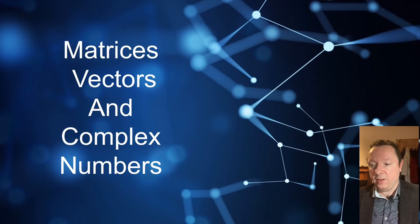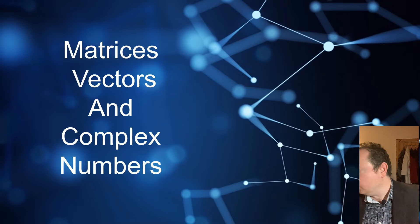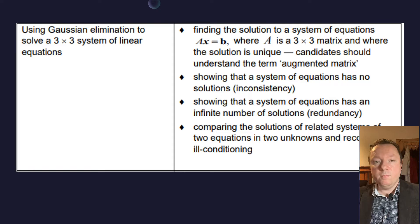Okay, matrices, vectors and complex numbers. Quite a lot out of this this year. Starting off with matrices, Gaussian elimination to solve a system of 3x3 linear equations. So the first point is fine, find a solution to a system of equations A x equals B, where A is a 3x3 matrix. Use an augmented matrix and solve it in the normal way, that is fine.